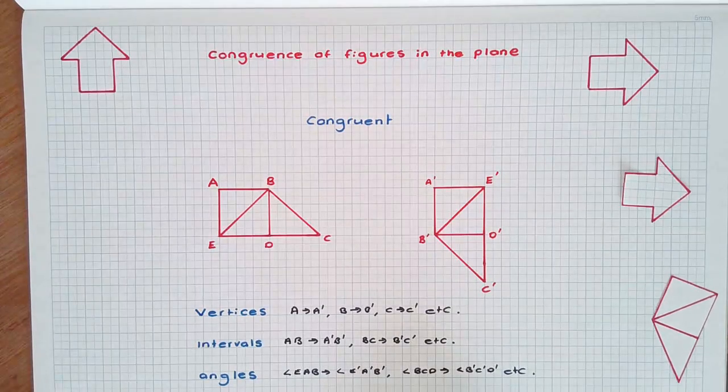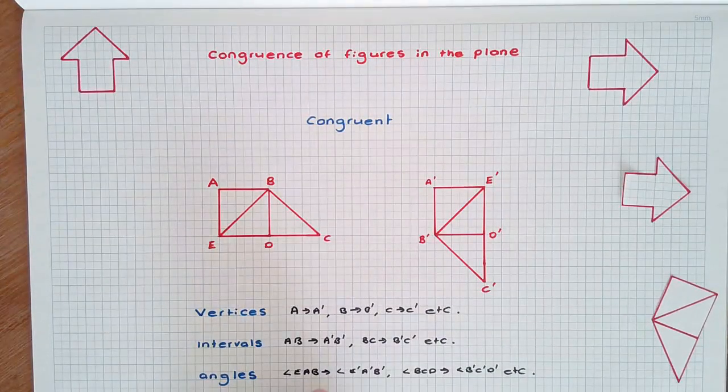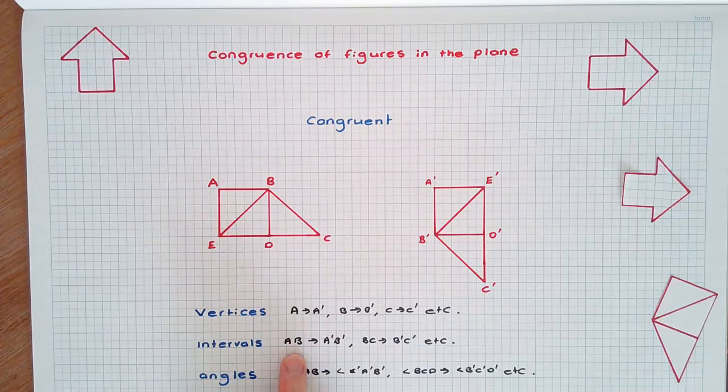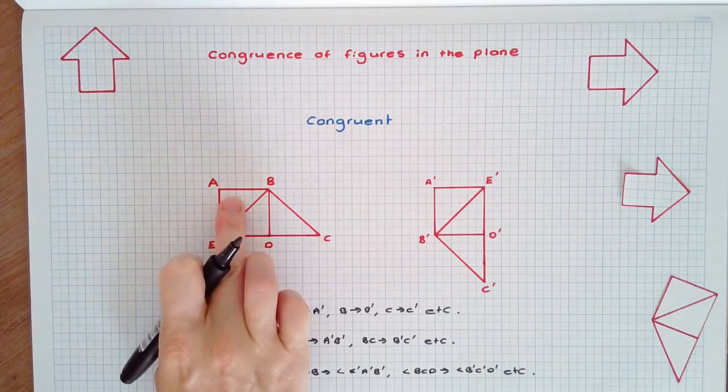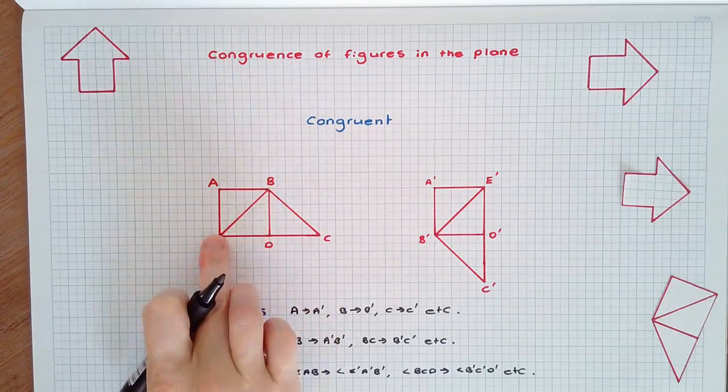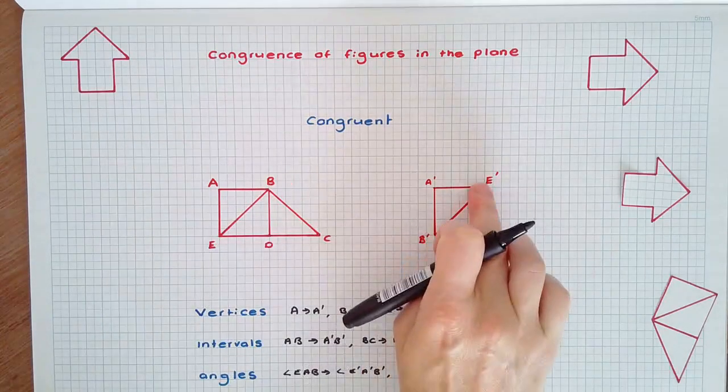So when two figures are congruent, the paired intervals have the same length, the paired angles have the same size, and the paired regions, for instance A B E, has the same area as A dash B dash E dash.